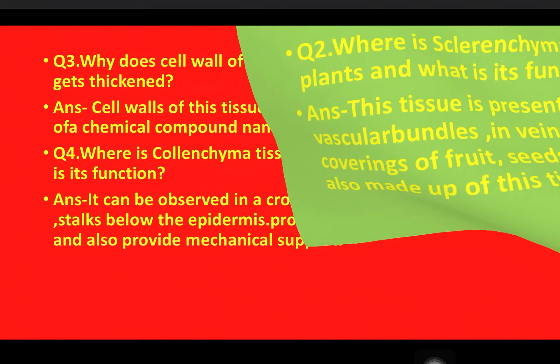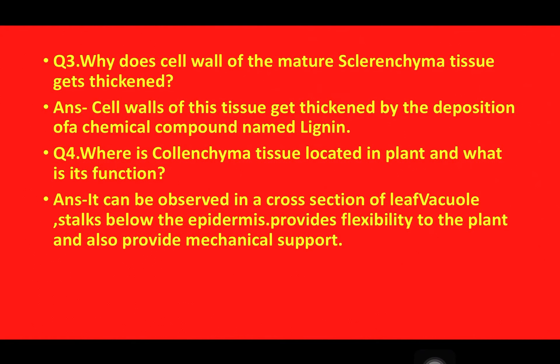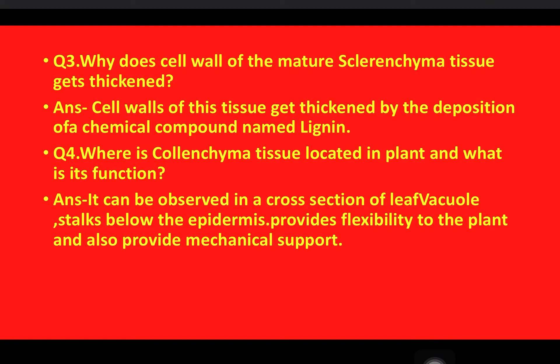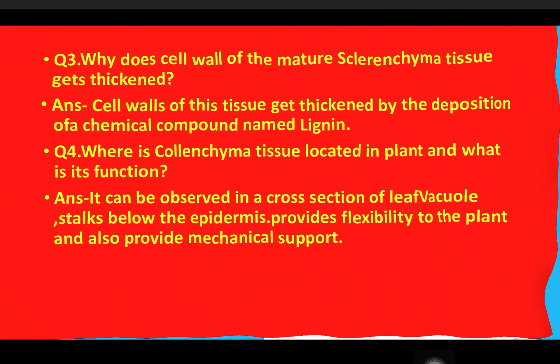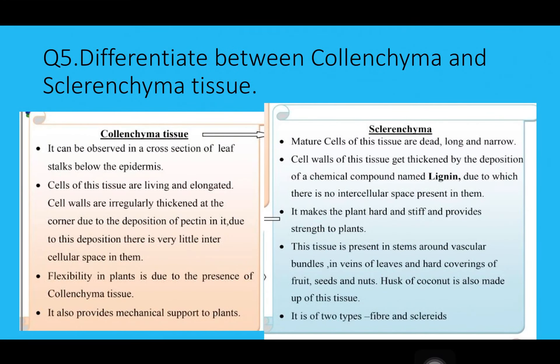Question number three: why does the cell wall of mature sclerenchyma get thickened? It is due to the deposition of a chemical known as lignin — remember that name. Question four: where is colenchyma tissue located in plants and what is its function? It can be observed in the cross-section of a leaf stalk below the epidermis, and it provides flexibility to the plant and also provides mechanical support.